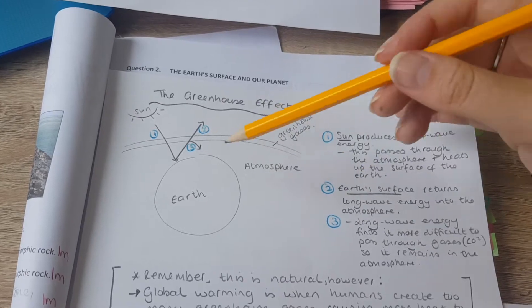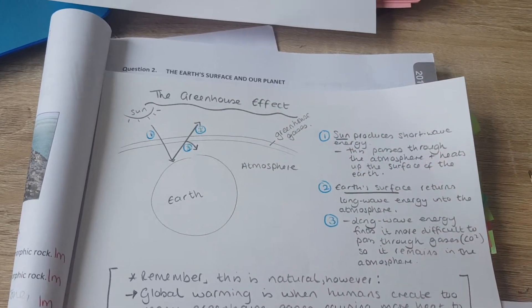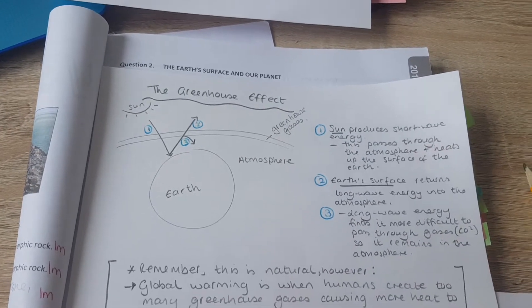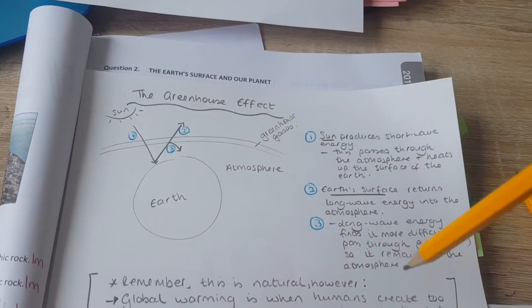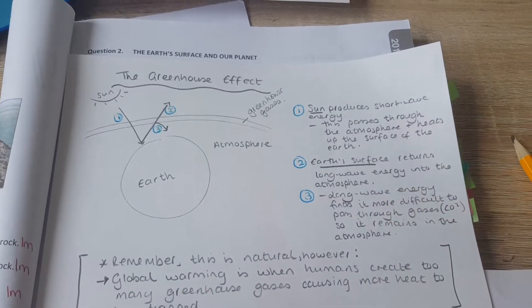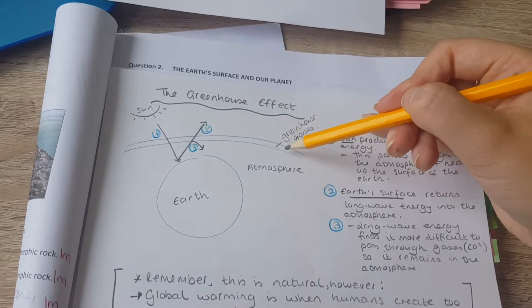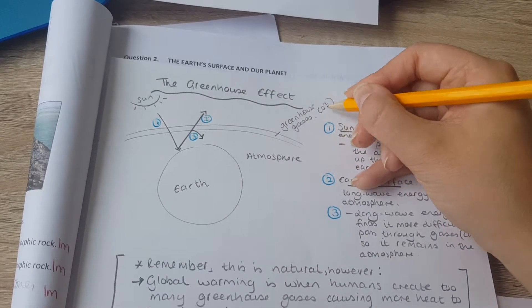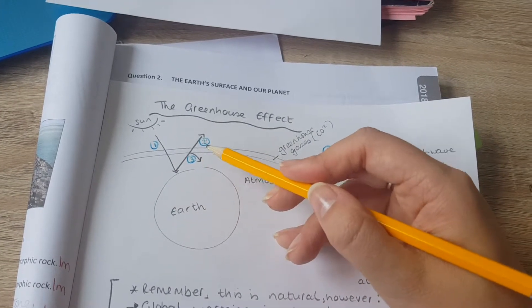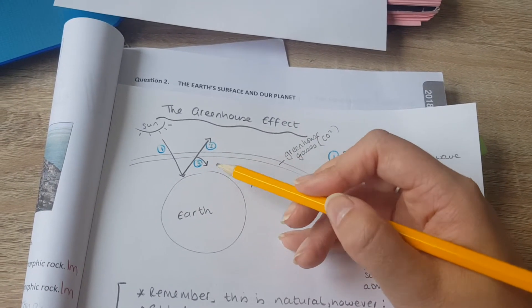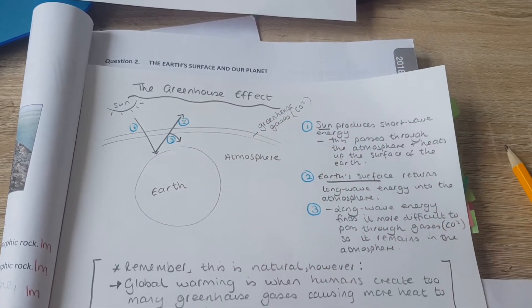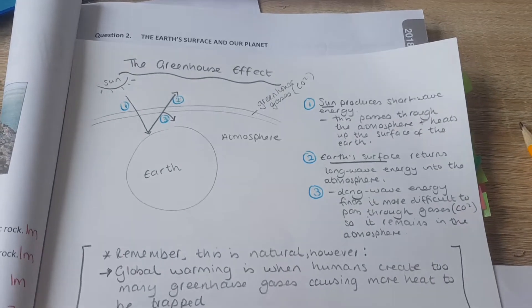Next thing, number two is here. Earth's surface returns longwave energy into the atmosphere and outwards. Number three, some of it actually gets trapped. Longwave energy finds it more difficult to pass through gases such as CO2. That's our greenhouse gas here. So literally this energy, this heat cannot get out. Some of it can't escape. It gets trapped within the greenhouse gas and stays in the atmosphere. That's how the Earth warms up. It remains in the atmosphere.